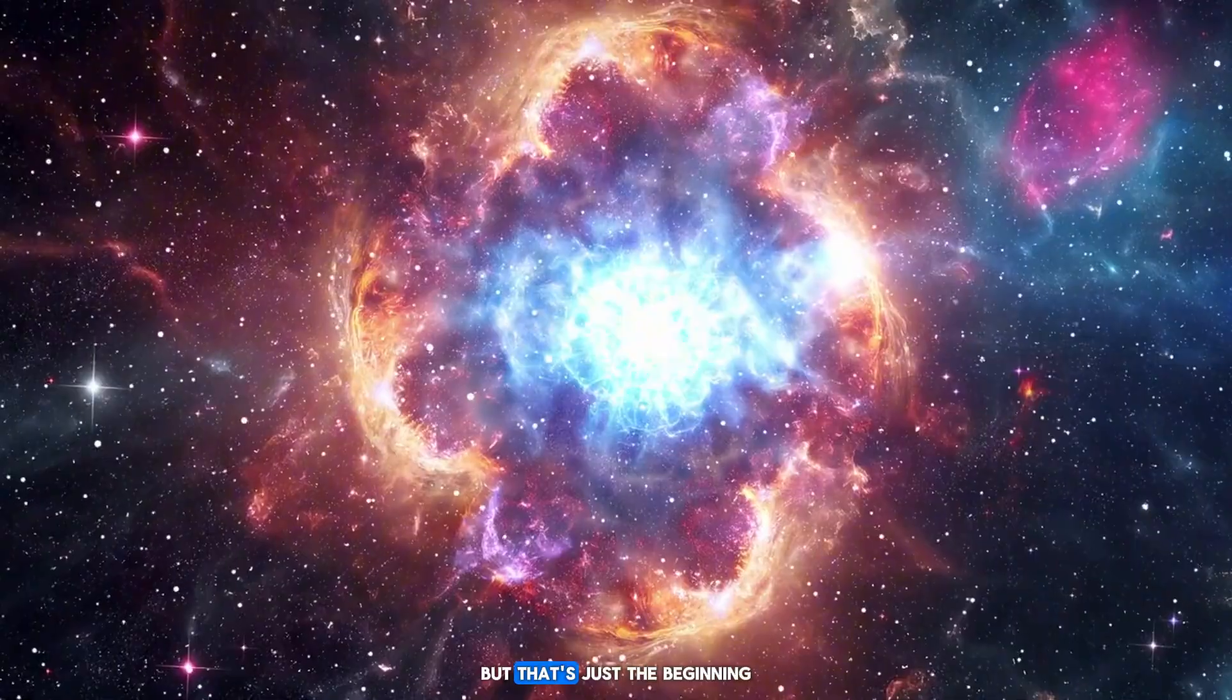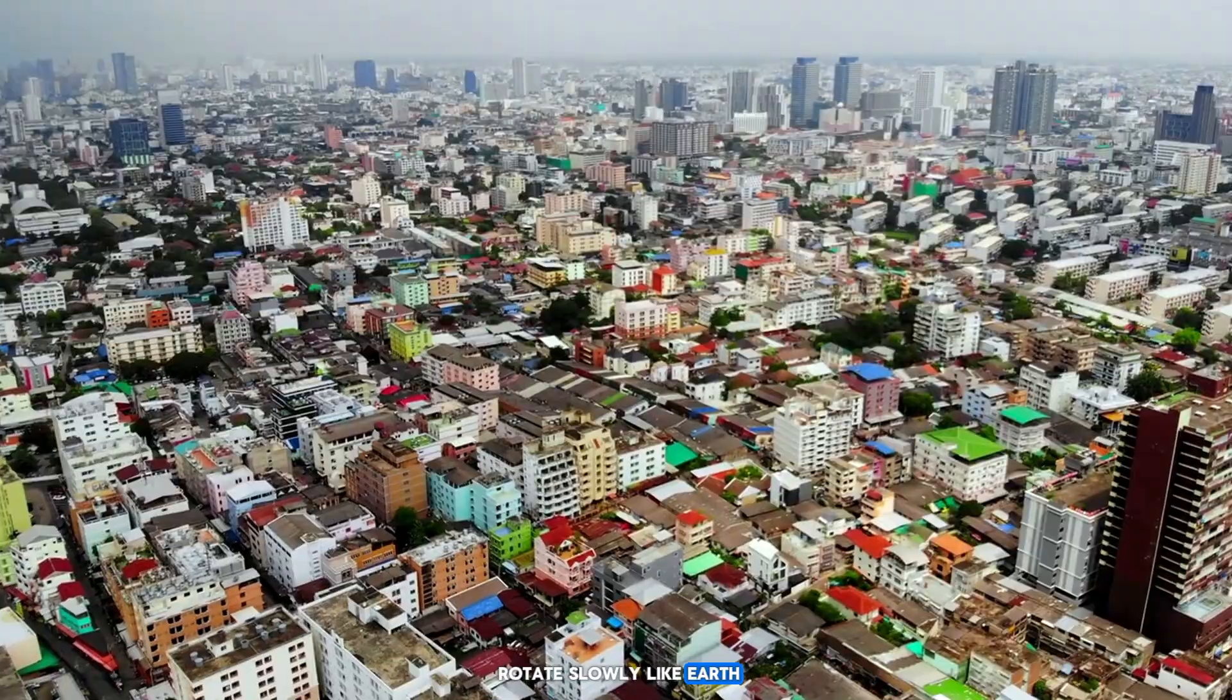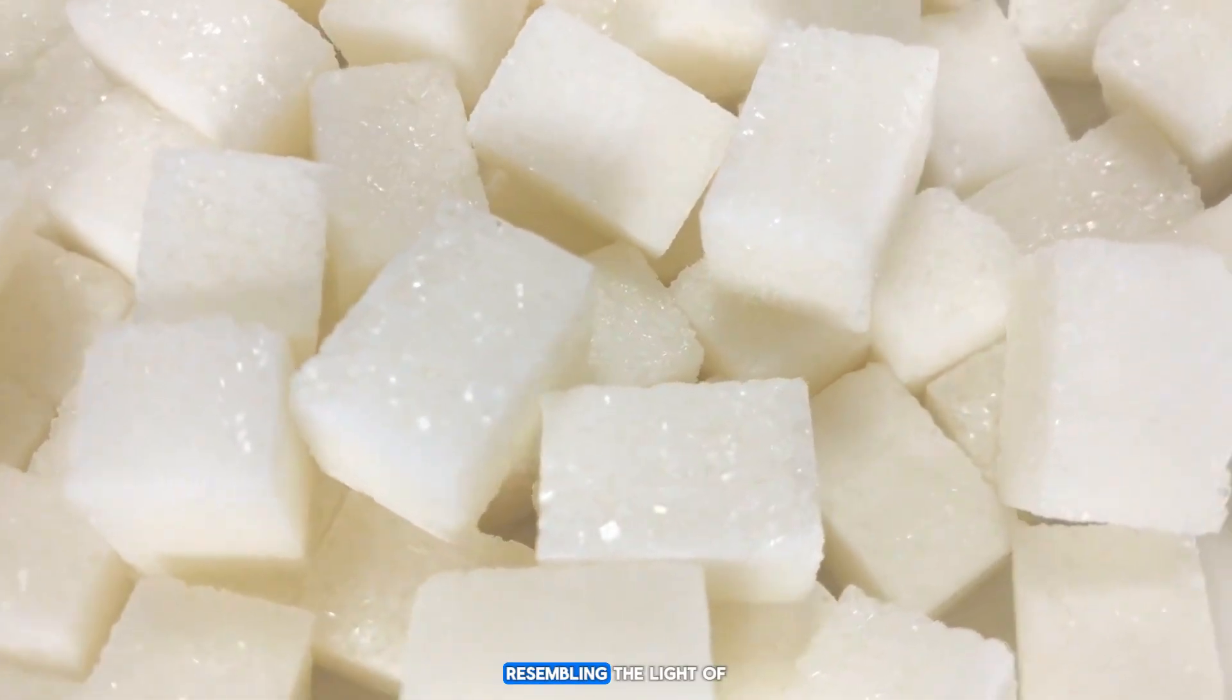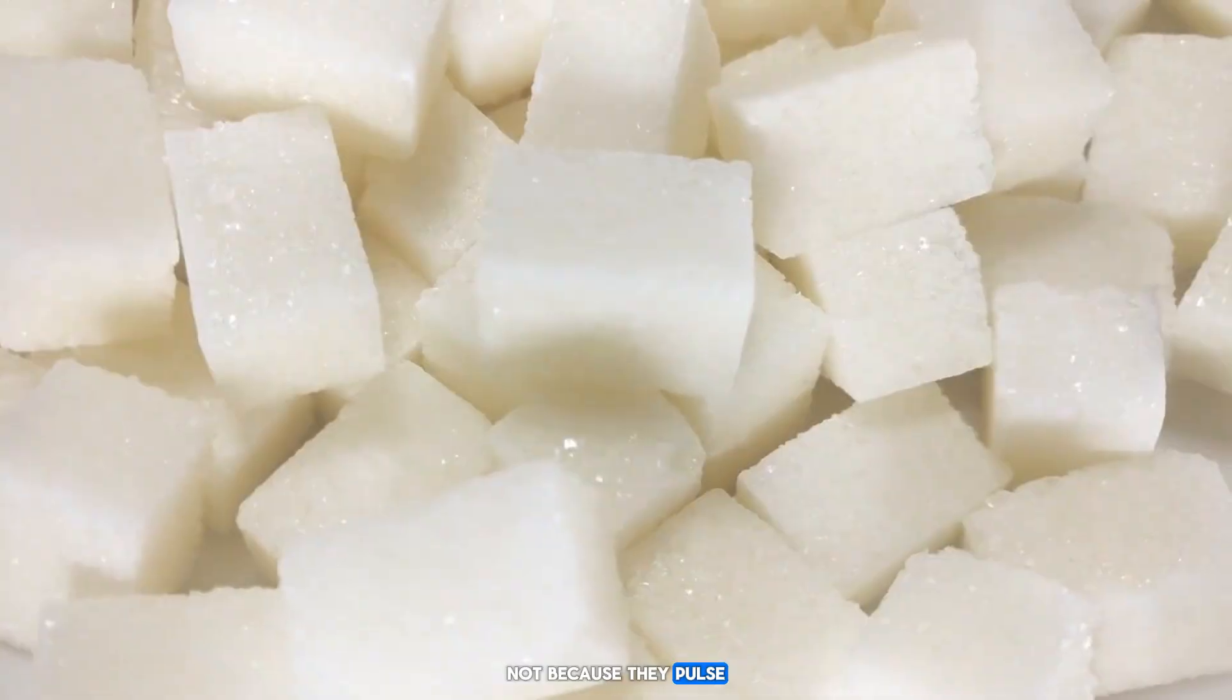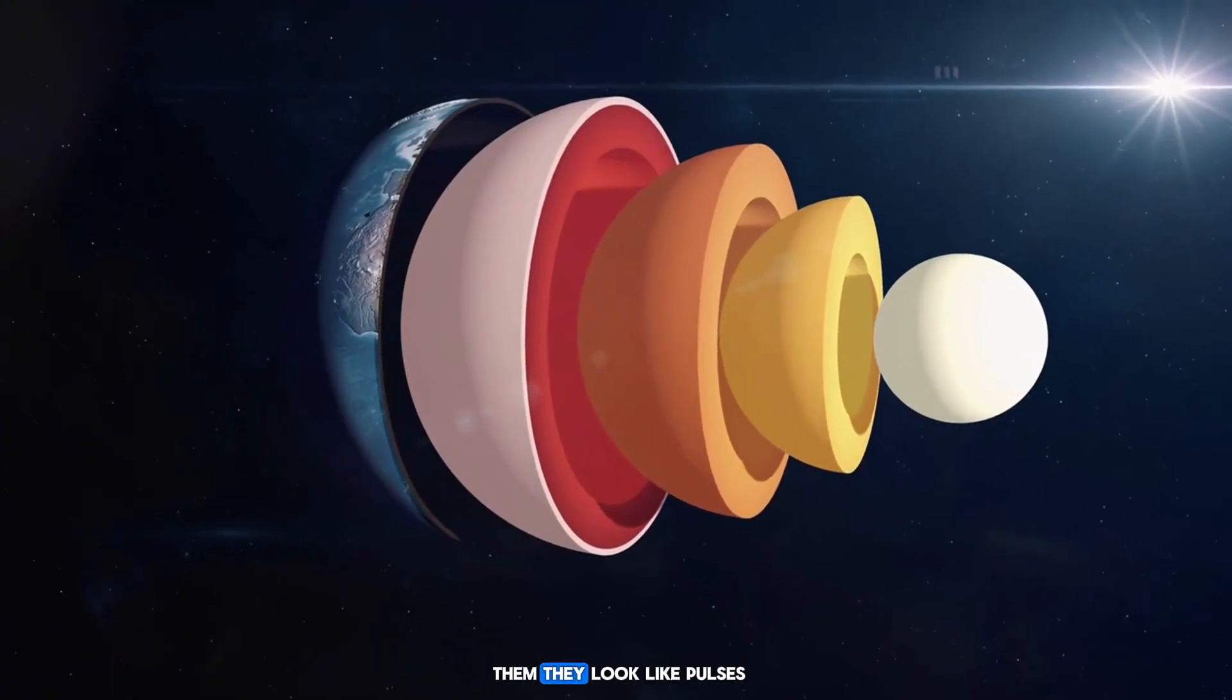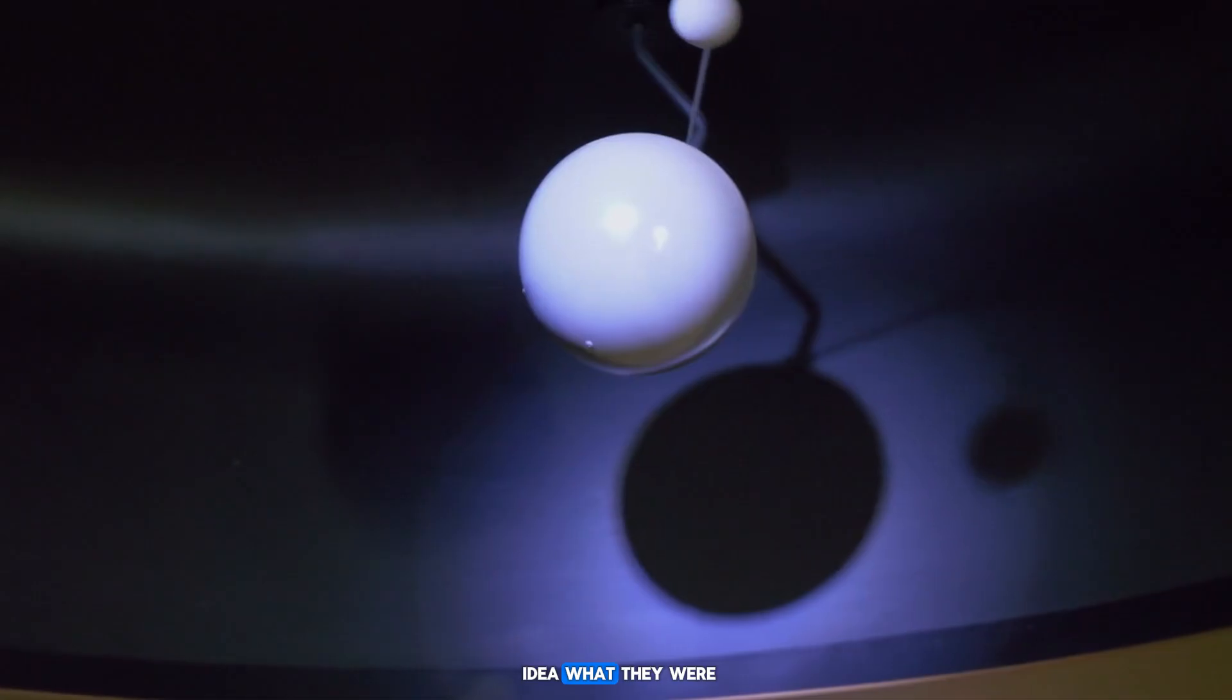But that's just the beginning. Some neutron stars don't rotate slowly like Earth—they spin very fast, so fast that they emit bursts of radiation into space, resembling the light of a lighthouse. We call them pulsars, not because they pulse like a heart, but because these rays fly past us at regular intervals, and when we detect them, they look like pulses.